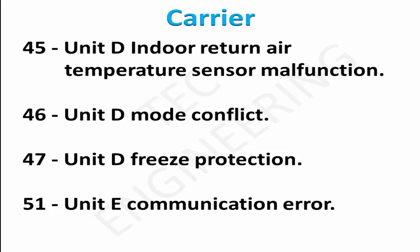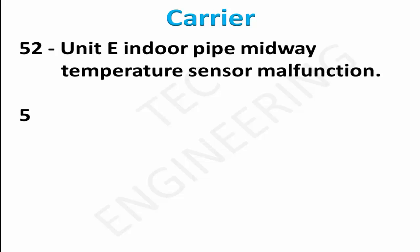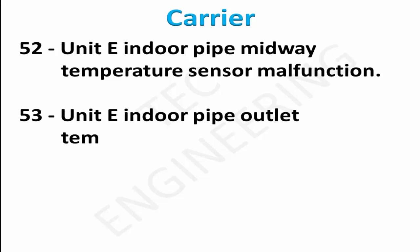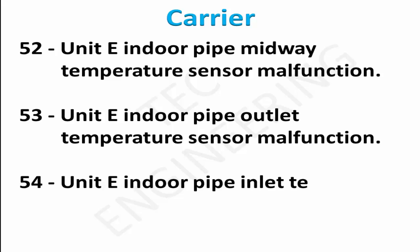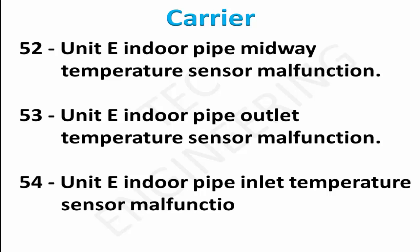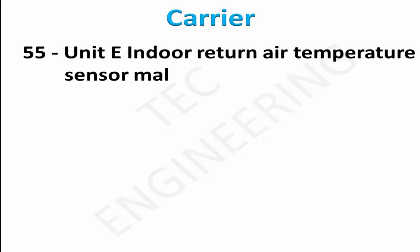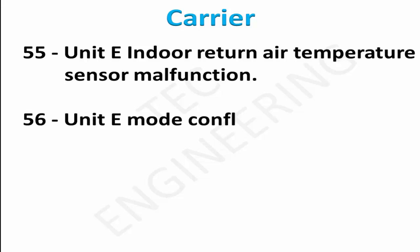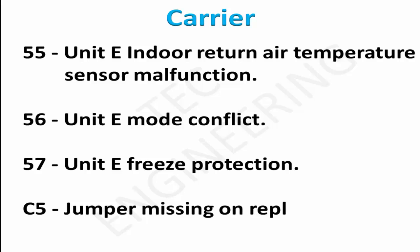51 Unit D Communication Error. 52 Unit A Indoor Pipe Midway Temperature Sensor Malfunction. 53 Unit A Indoor Pipe Outlet Temperature Sensor Malfunction. 54 Unit A Indoor Pipe Inlet Temperature Sensor Malfunction. 55 Unit A Indoor Air Temperature Sensor Malfunction. 56 Unit A Mode Conflict. 57 Unit A Freeze Protection. C5 Jumper Missing On Replacement Indoor Board.